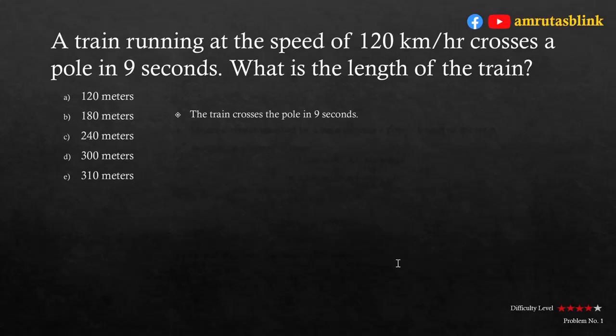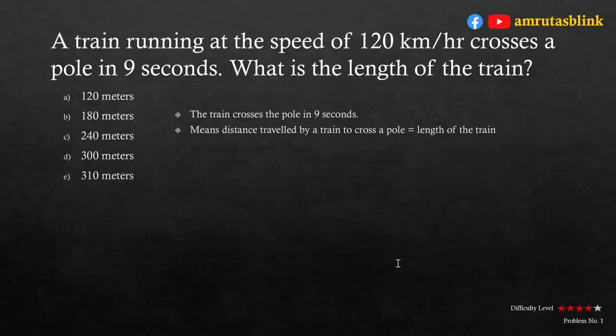It is given that the train crosses the pole in 9 seconds. If you visualize correctly, when the engine of the train crosses a pole, it will move ahead. Only when the last compartment of the train crosses the pole can you say the complete train has crossed the pole. Hence, the length of the train is nothing but the distance traveled by the train to cross the pole.